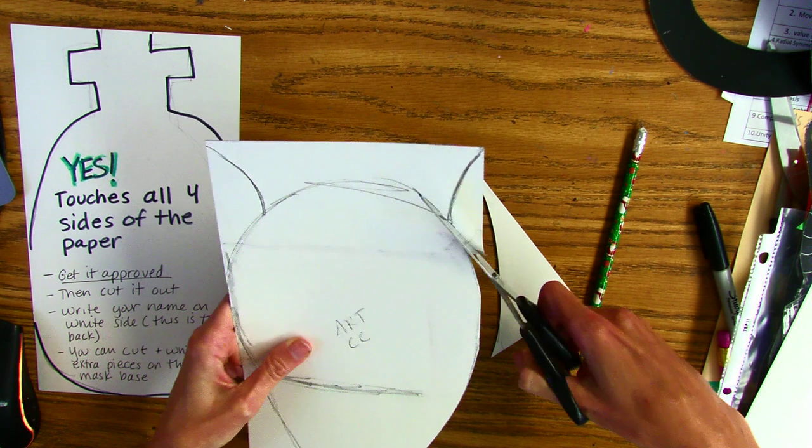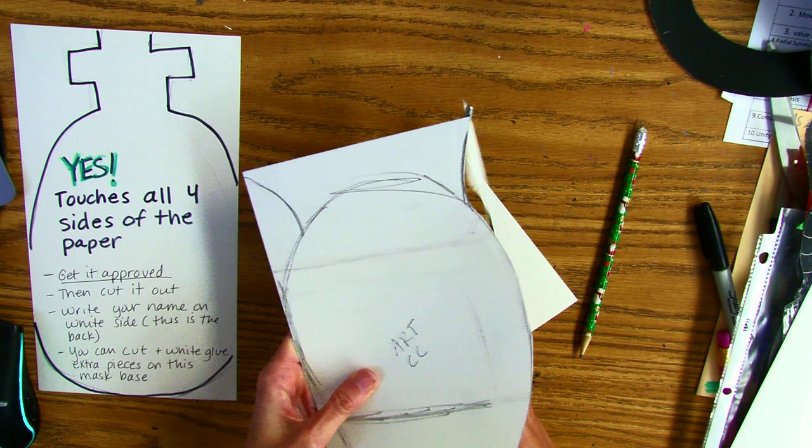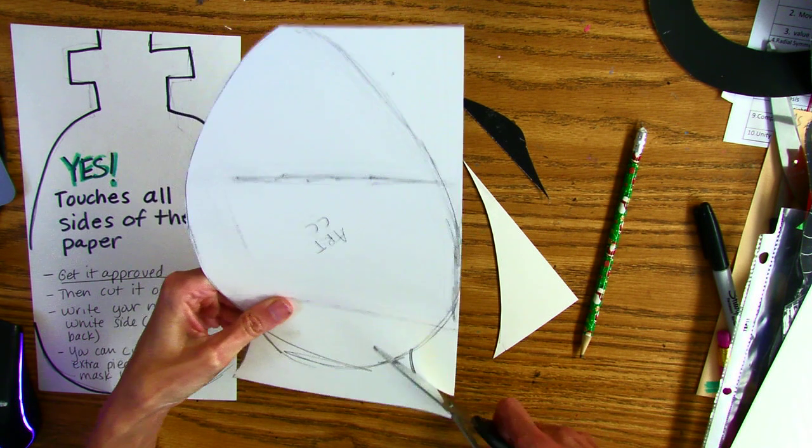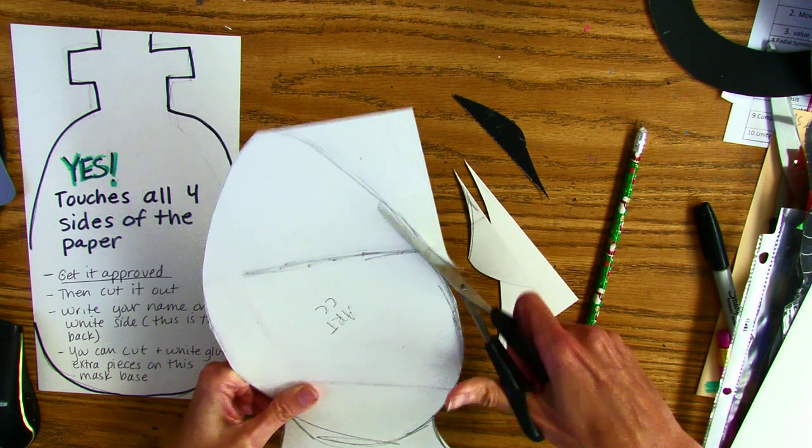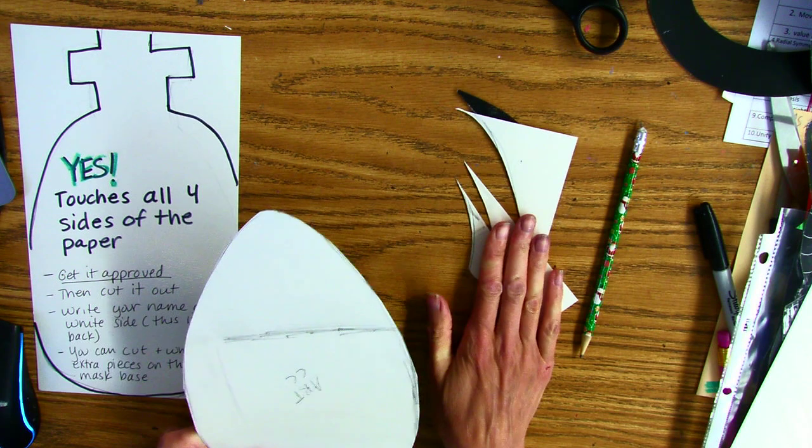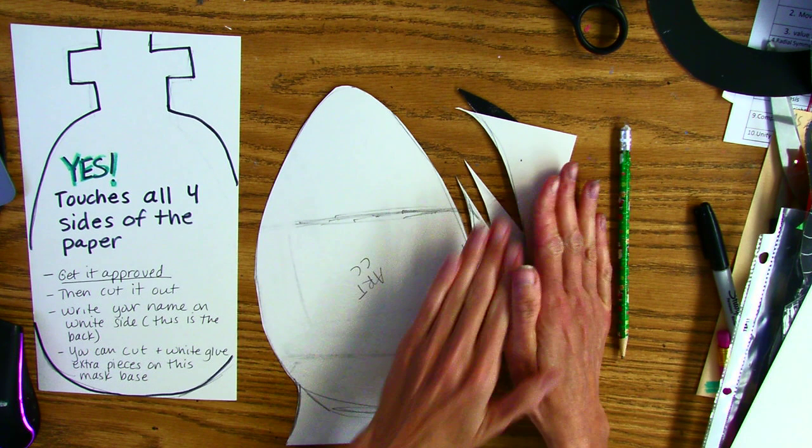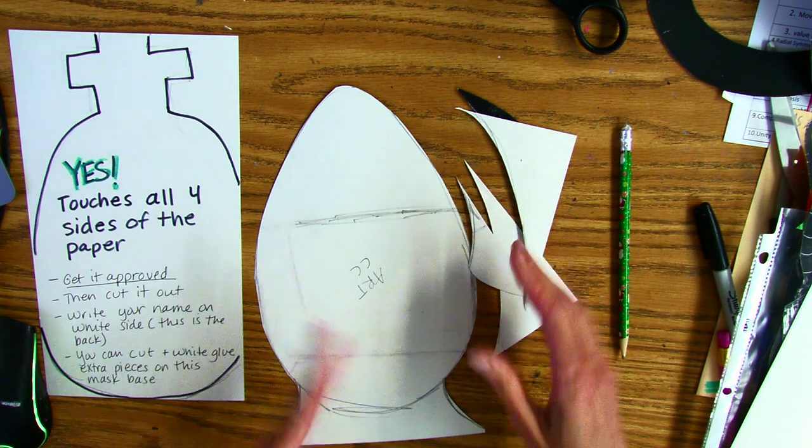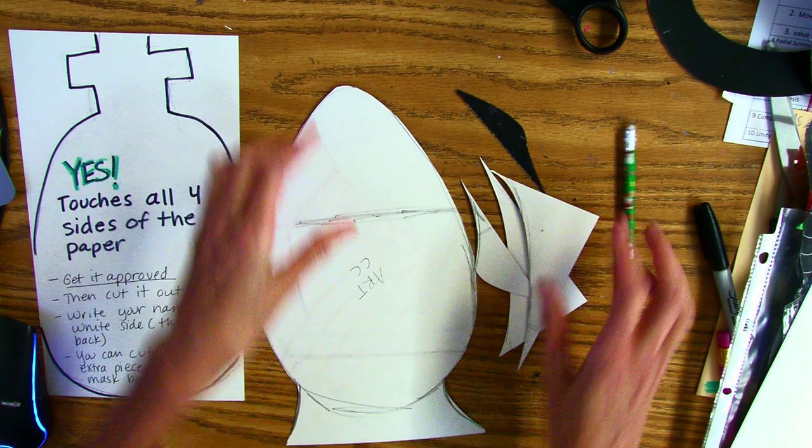Don't cut that part off, you have to follow the line. These scraps might be usable, so save the scraps for another part. You can make ears out of these or spikes or something for your mask.